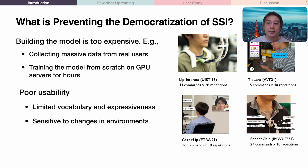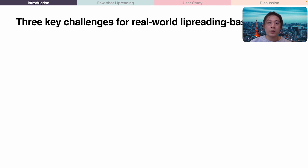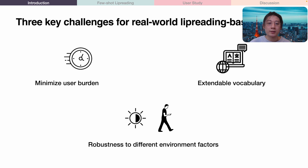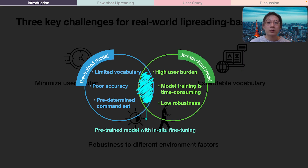Furthermore, such biased datasets collected intensively from laboratory settings make the model vulnerable to environment changes, meaning its performance can decrease significantly as the data domain shifts over time. Therefore, we identify three key challenges for real-world lip-reading systems: first, minimize the user burden of data collection; second, make it easier for new users to add custom commands; and third, the system should be highly robust to different environments and interaction factors, since mobile phones can be used in various scenarios — bright outdoors or dark indoors, seated or walking.